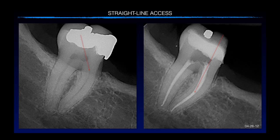Here's a clinical example. This is how you do not want to come into the canals to try to clean. This bulge of dentin here in the mesial needs to get out of the way, and it should look like that when you're done cleaning that.